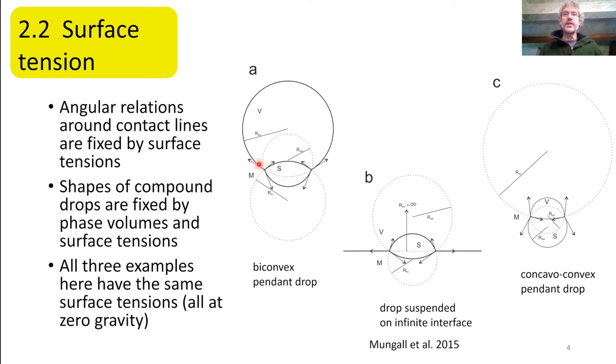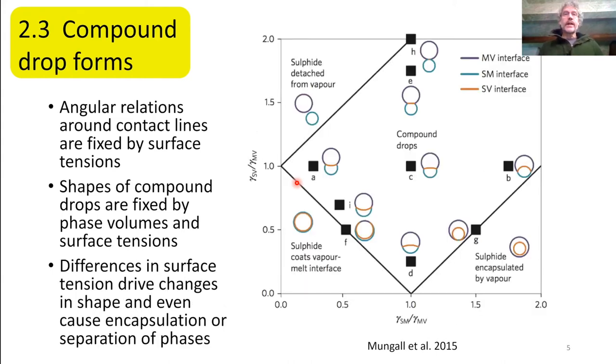And so these angular relations at contact lines between, here it's vapor, here's sulfide melt, in a basaltic liquid, these contact lines have fixed shapes or fixed orientations. And so the form of the overall compound drop is controlled by these geometric relations here, and by the relative sizes of the vapor phase and the sulfide phase. So these three examples all have the same surface tensions, but the shapes of these interfaces are very different, because in this case, for instance, you've got an infinite interface between vapor and liquid, and the sulfide drop is just poised on the surface, whereas in this case you have a little vapor bubble on a big sulfide drop, or here you have a big vapor bubble on a small sulfide drop.